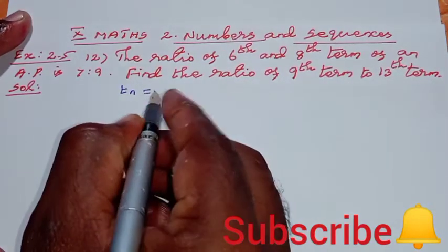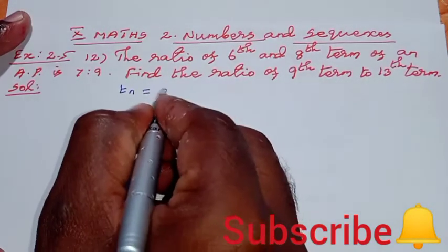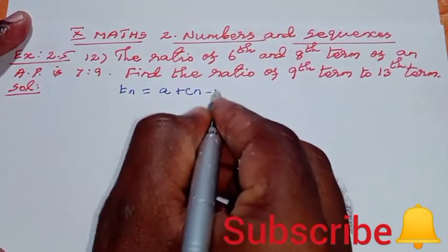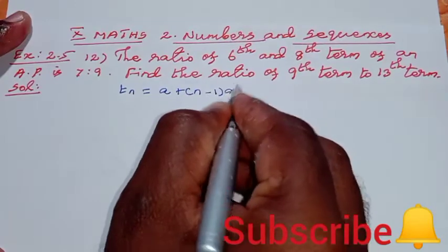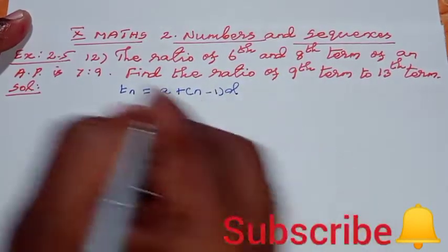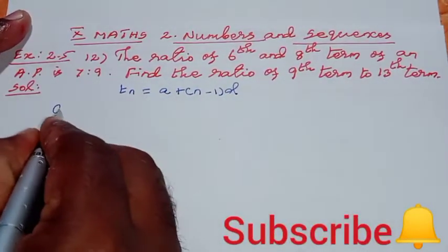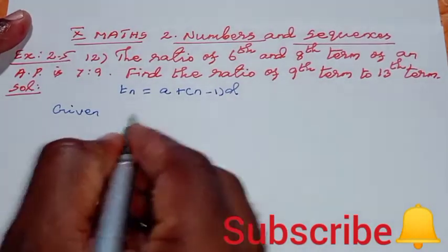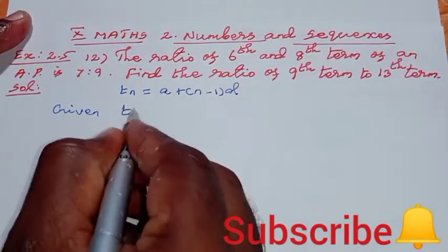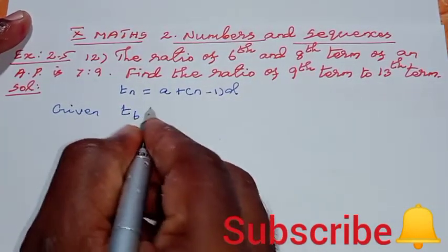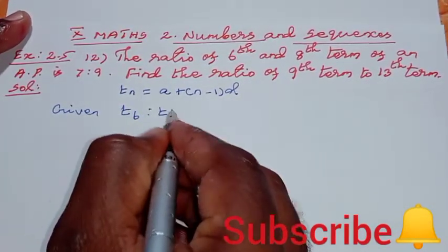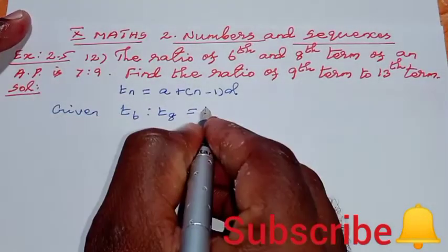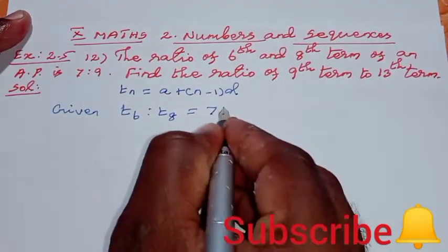The nth term of an AP is equal to a plus n minus 1 into d. First, what is given: the ratio of 6th term T6 to 8th term T8 is 7 is to 9.